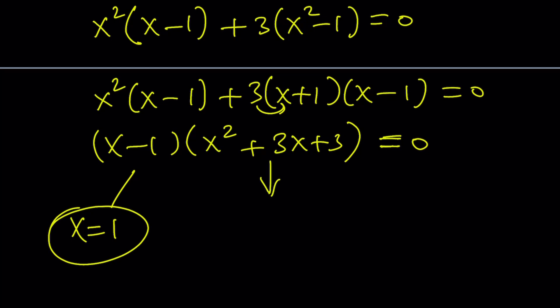And this quadratic equation is going to give you, let's check it out, with the quadratic formula, negative b plus minus the square root of b squared 9 minus 4ac, which is 12. That's going to give you a negative 3. Uh-oh, those are not going to be real solutions.